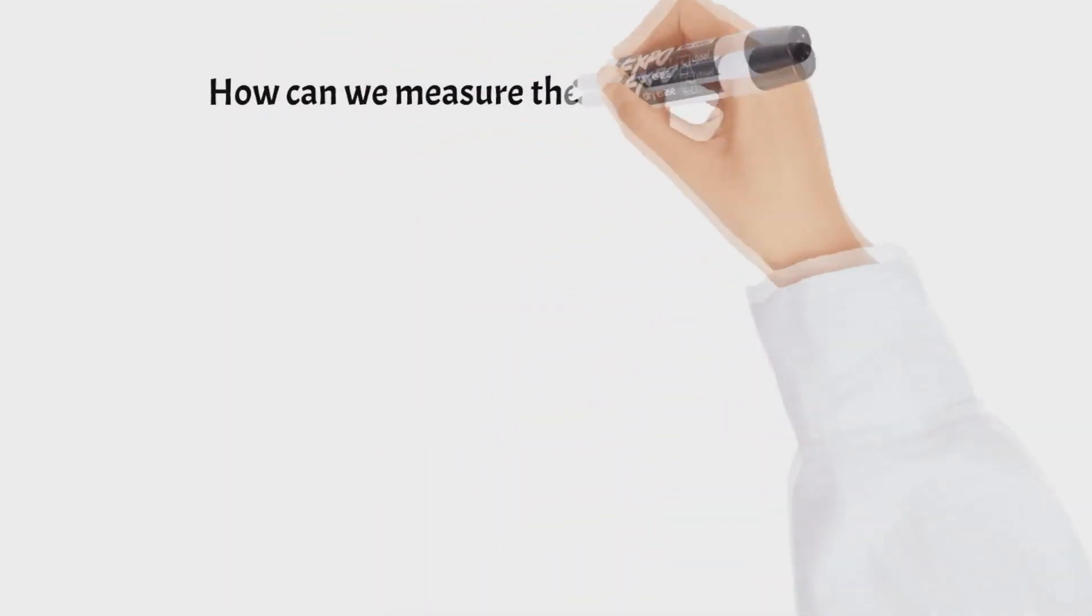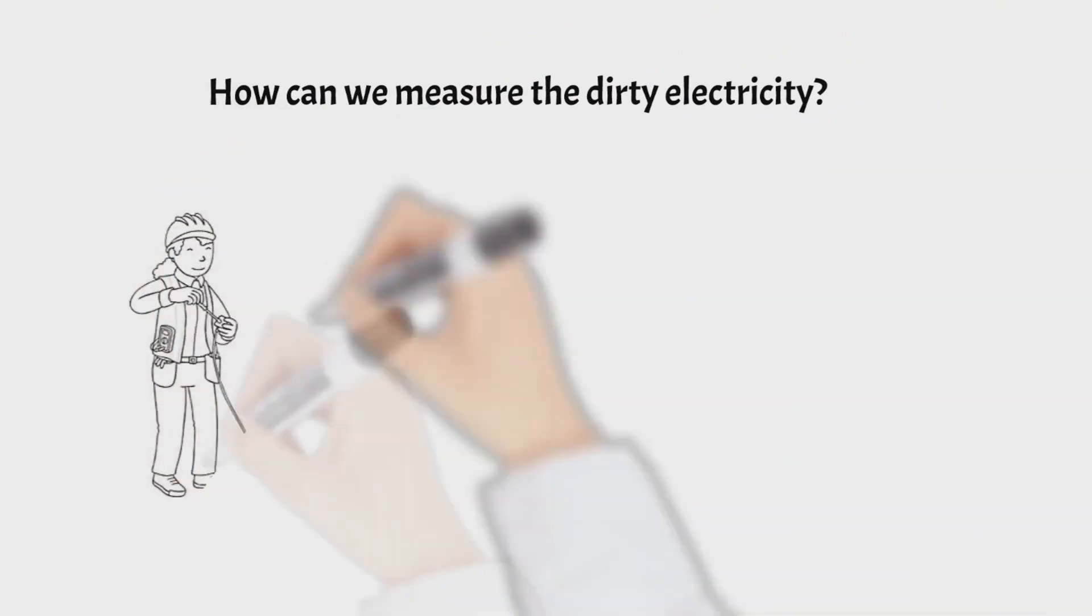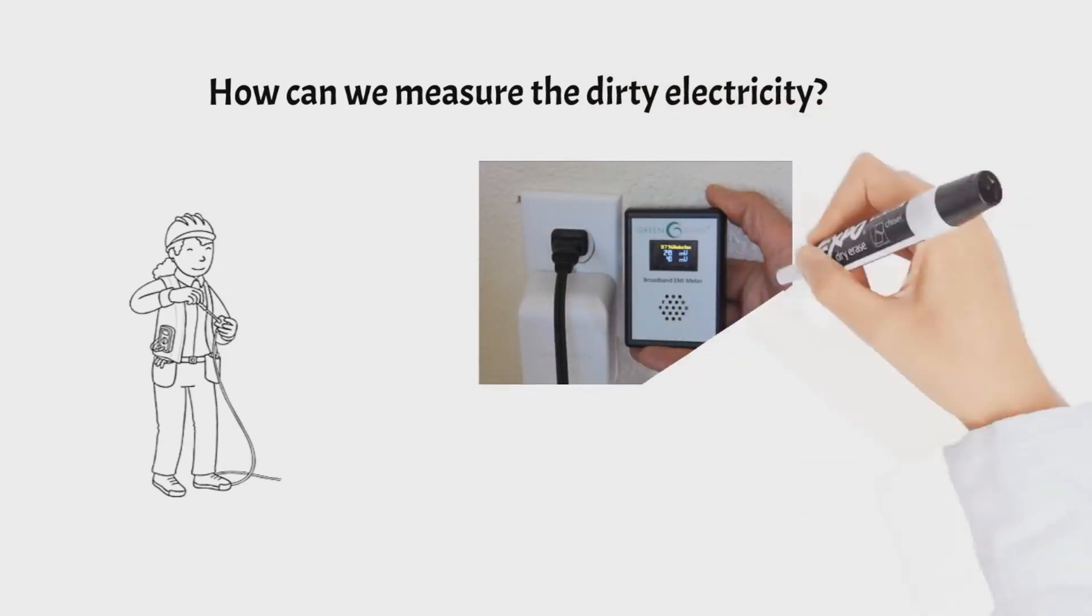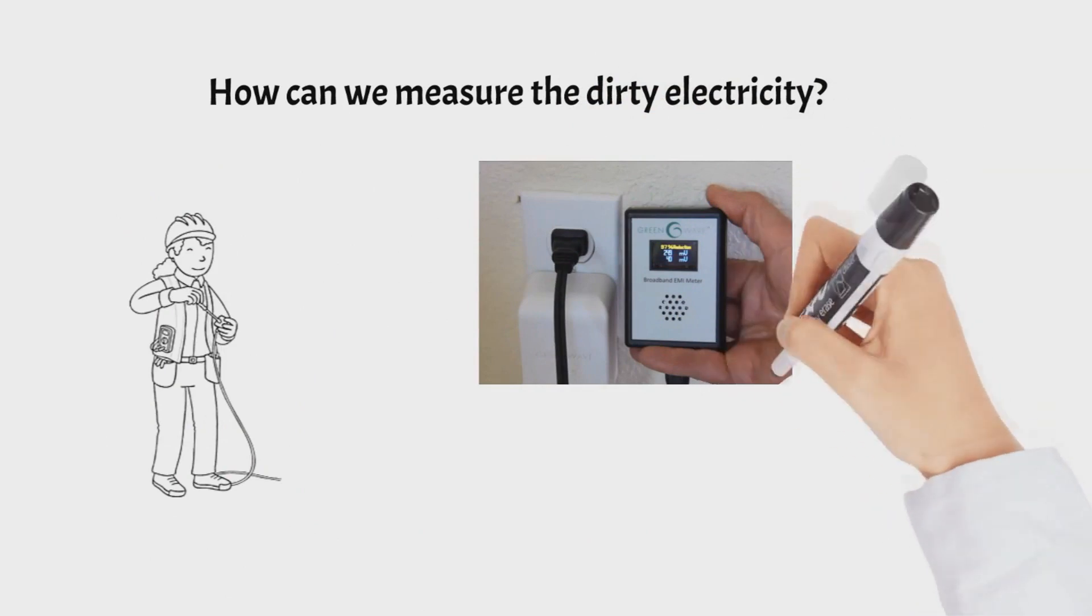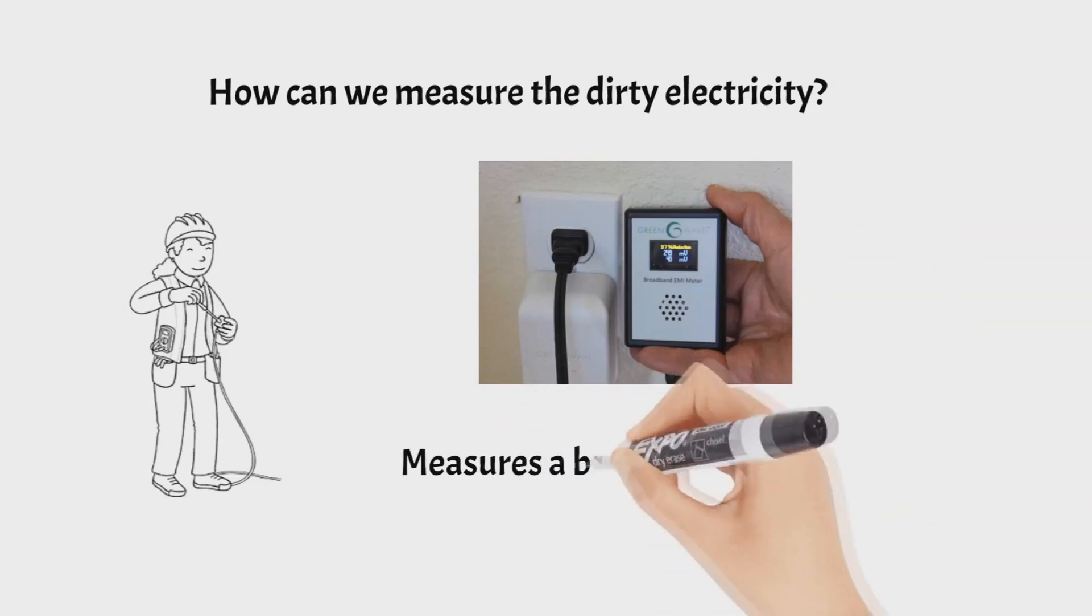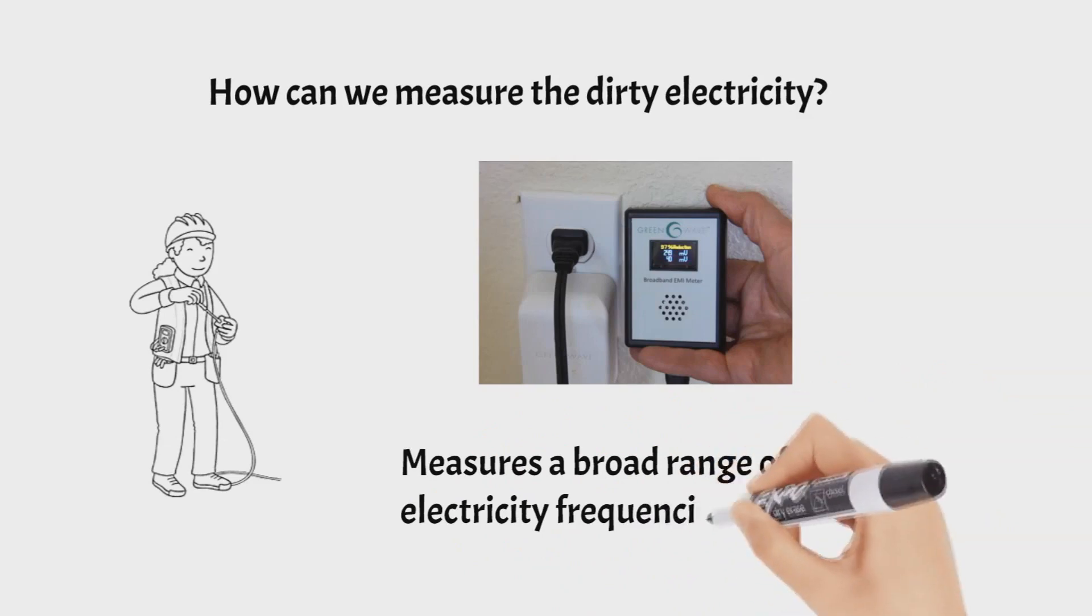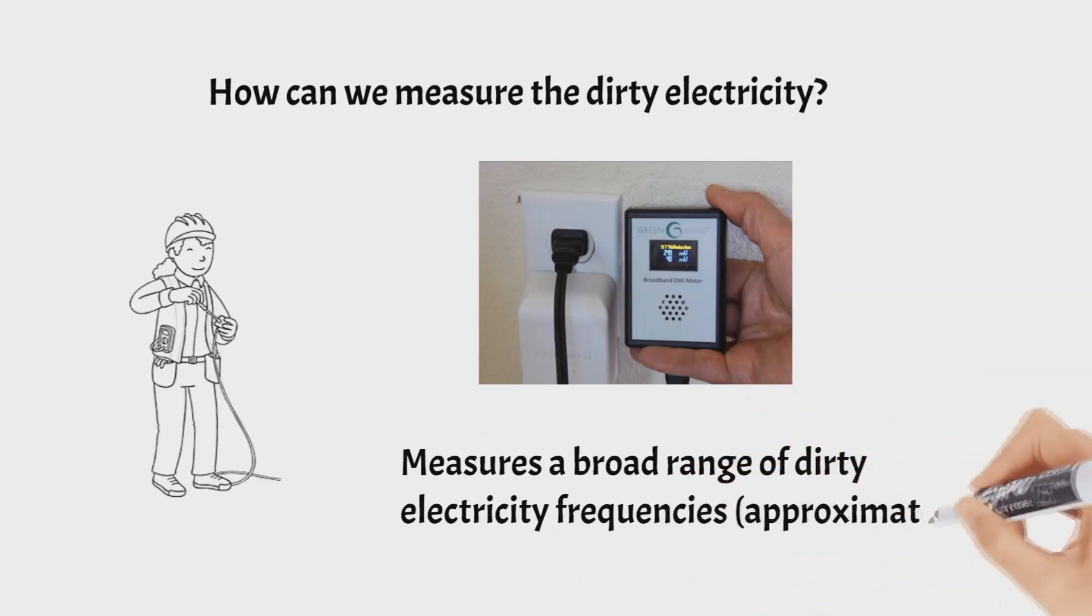So how can we measure dirty electricity? You can request the help of an electrician who can use a dirty electricity meter. We can plug it into our socket and measure the amount of dirty electricity in our home. This can measure dirty electricity at frequencies between 3 kilohertz up to 10 megahertz, depending on the type of electrical meter.